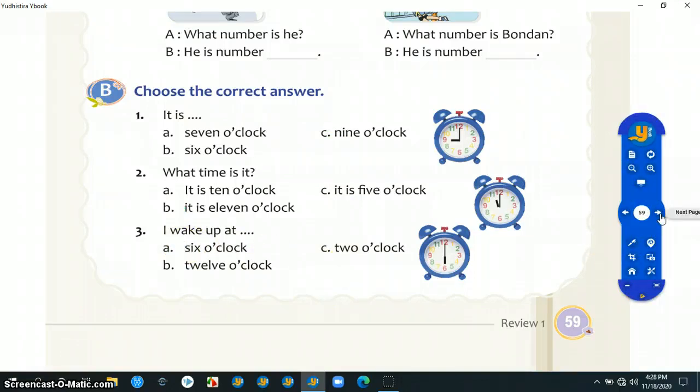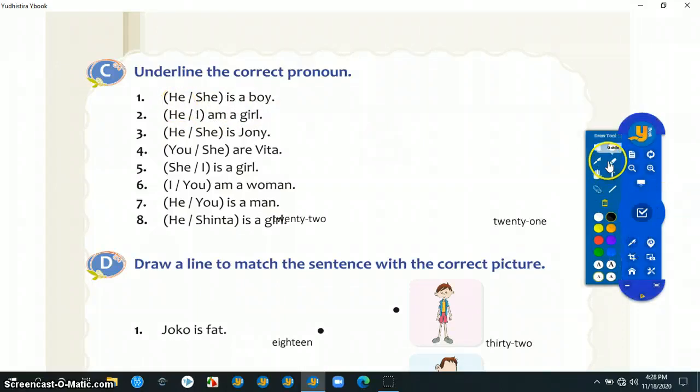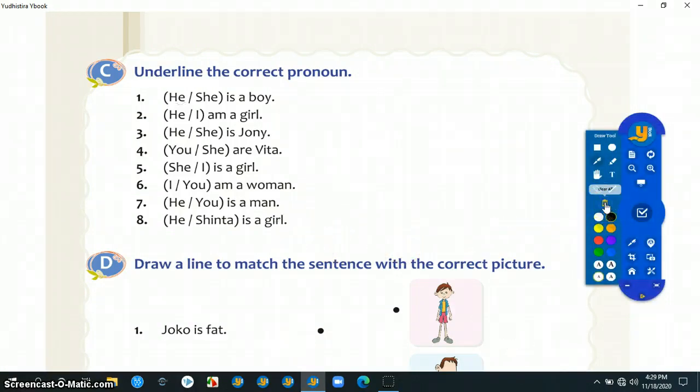Kita lanjutkan ke poin selanjutnya: underline the correct pronoun, garis bawah kata ganti yang benar. A boy adalah laki-laki, berarti otomatis kata ganti yang dipakai adalah he, maka kita garis bawah he. Number two: I am a girl. Ingat pokoknya pasangannya: I am, you are, they are, we are, he is, she is, it is.